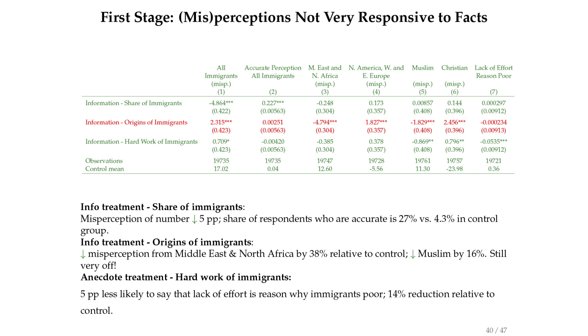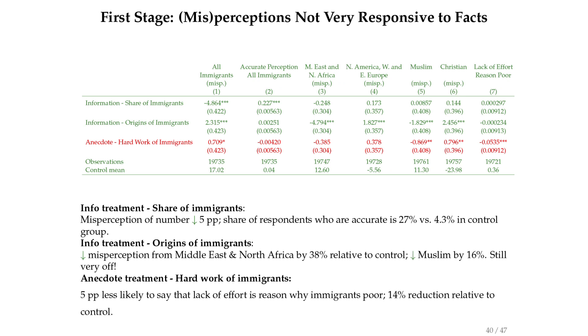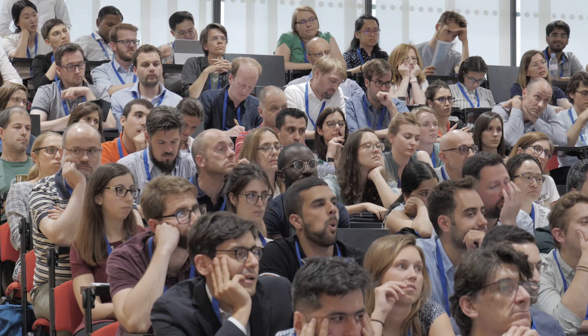It doesn't shift other views — the share of respondents perceived as Christian, Muslim, poor, etc. The information on origins tends to shift what it's supposed to shift: the perceived share of immigrants from the Middle East gets reduced, from Western Europe and North America gets increased, perceived Muslim immigrants reduced, Christian improved. The hard work treatment shifts the view that lack of effort is the reason immigrants are poor — it reduces that view. So broadly the first stage is there, but people don't totally absorb the information.